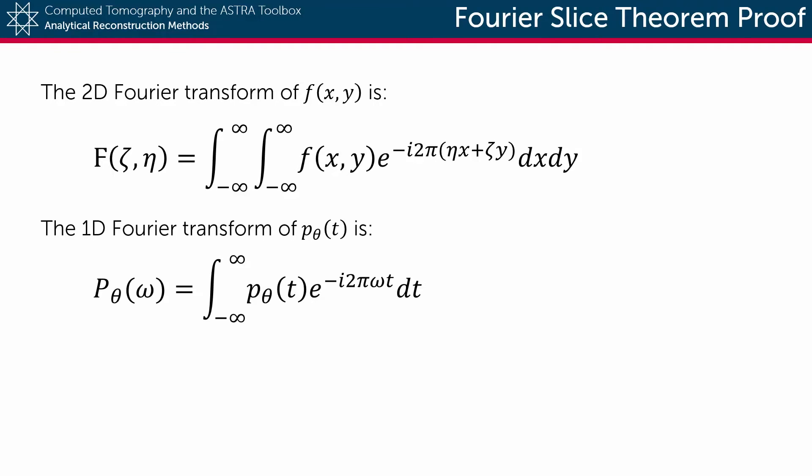Secondly, we write down the Fourier transformation of a detector function. This is the integral of the detector function multiplied by e to the power of minus i 2 pi times omega t.